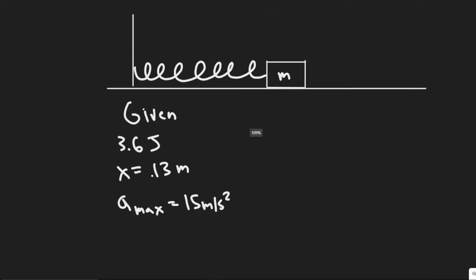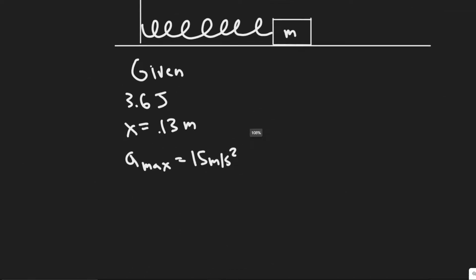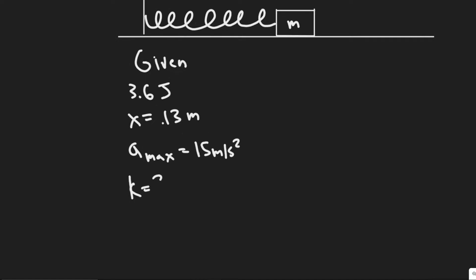We're also given the maximum acceleration it's going to experience when it's let go. And what we're trying to find are two things: the spring constant K and the mass M. So these are the two values we want to find.